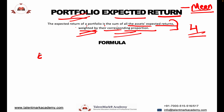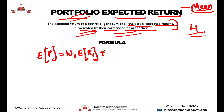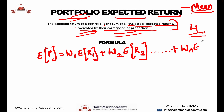The formula is: expected return on portfolio equals weight of asset 1 multiplied by expected return on asset 1, plus weight of asset 2 multiplied by expected return on asset 2, and this can be extended to n number of assets. This is the formula for portfolio expected return.